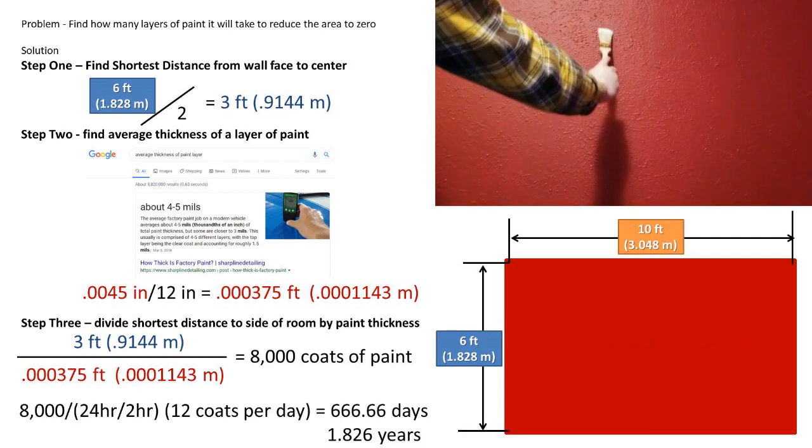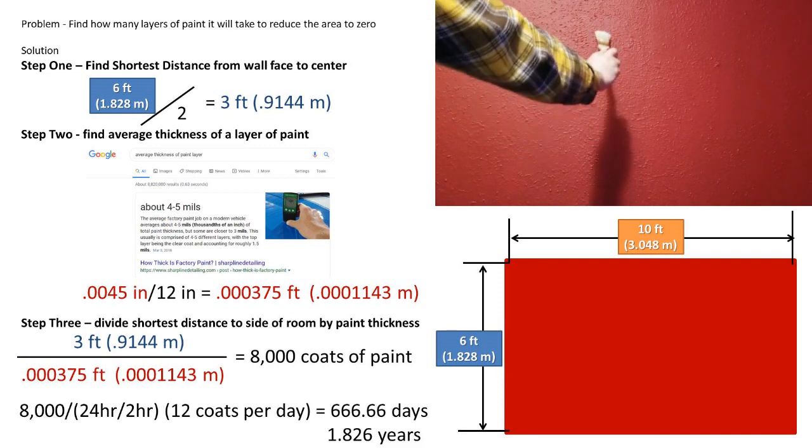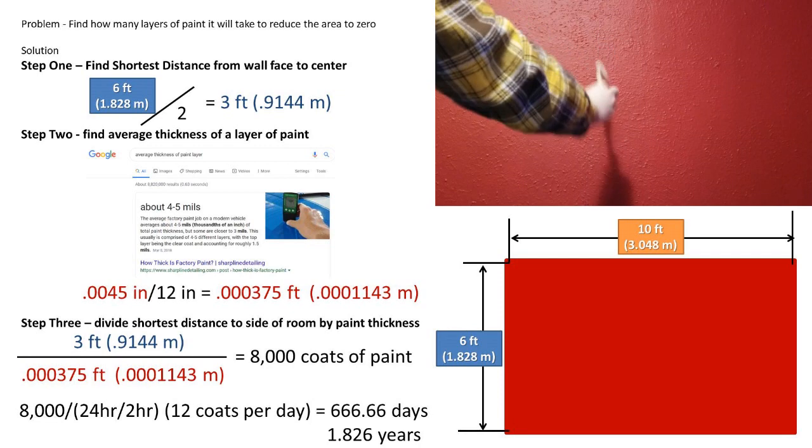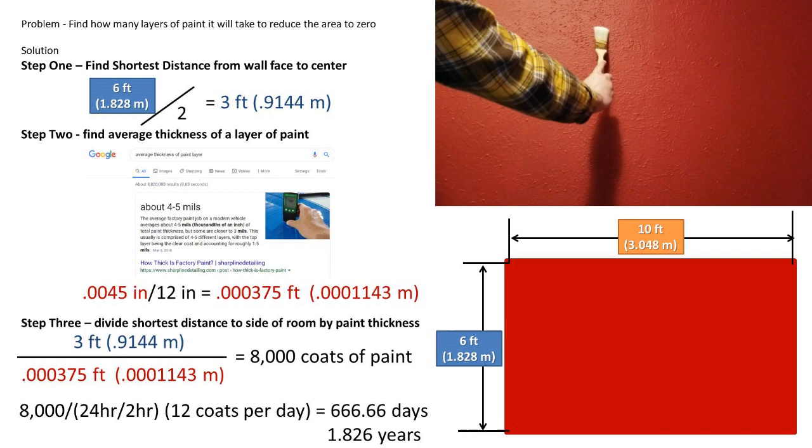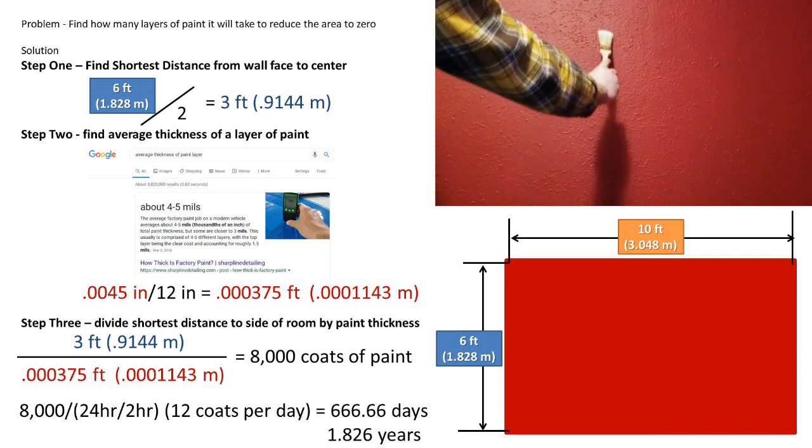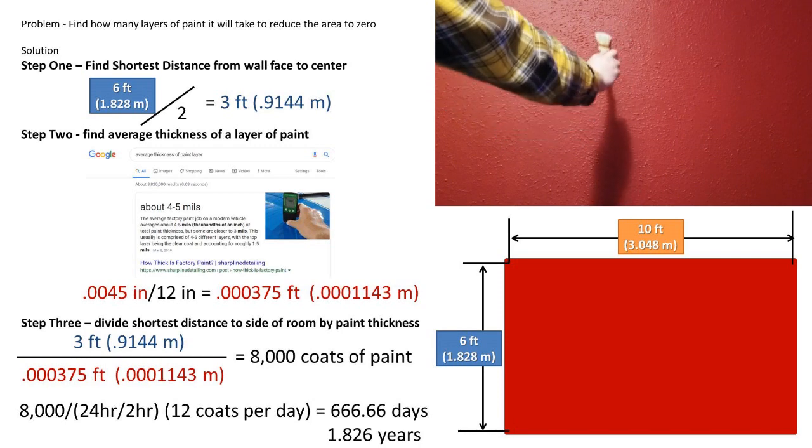Now I did some research, and they say that you can paint a room every 2 hours at minimum, so that is 12 coats per day. Dividing 8,000 by 12 coats per day, we are left with 666.66 days to paint this room, or 1.826 years to make this room completely paint.